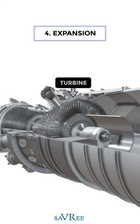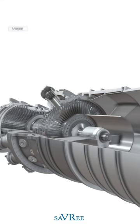Some of the power generated is sent back to the compressor, but most is transferred to the load via the central shaft.